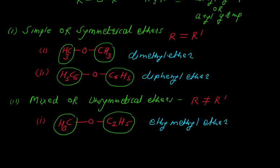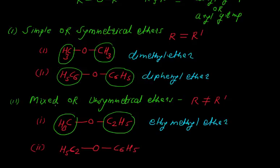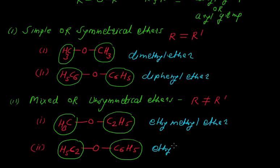We can also take another example: C2H5-O-C6H5. Here you can see that this is the ethyl group and this is the phenyl group attached to the oxygen. The name of this compound is ethylphenyl ether. In this mixed or asymmetric ether, the two groups are different and may be both alkyl, or one alkyl and one aryl group.